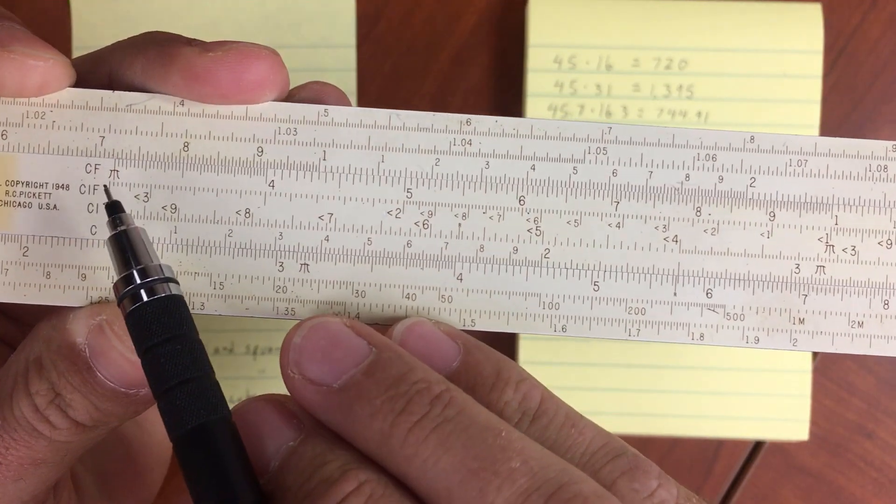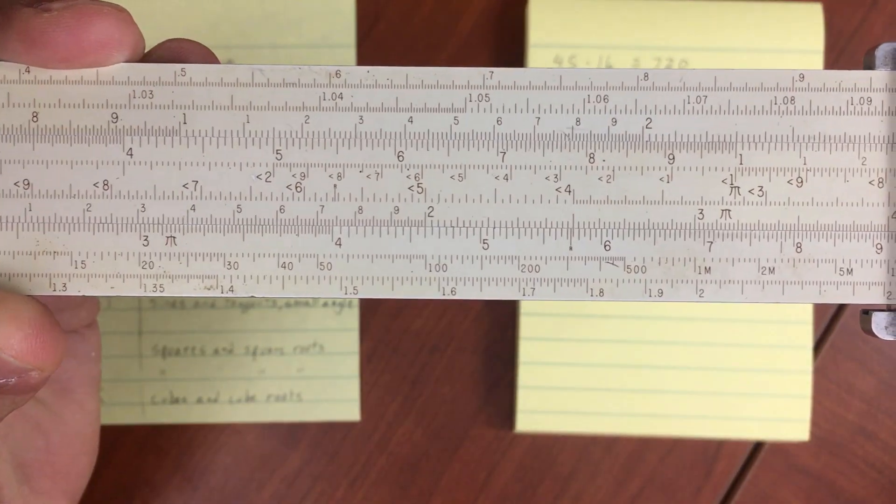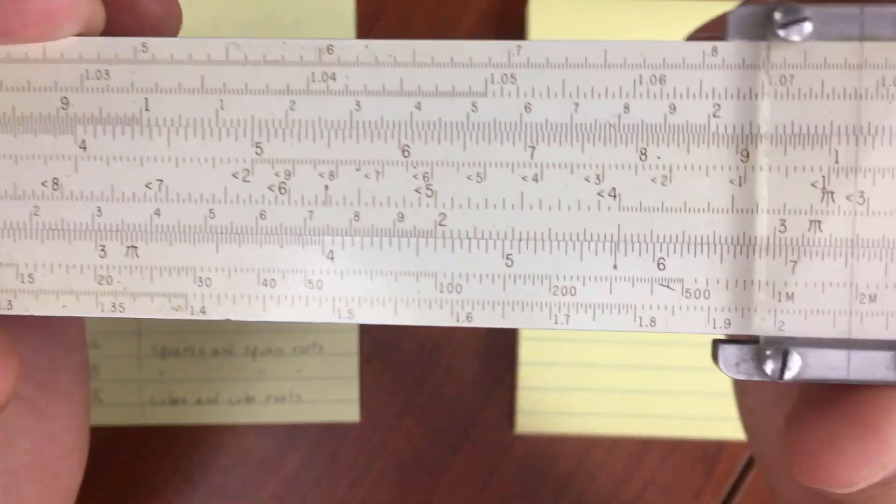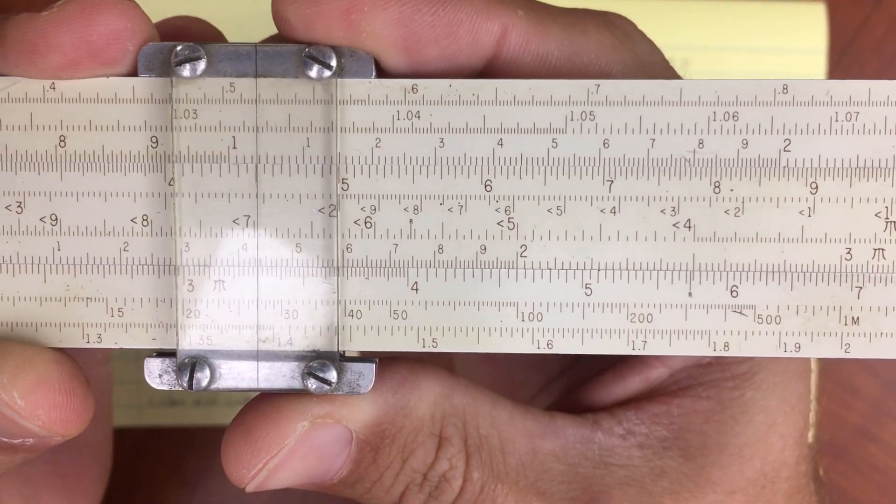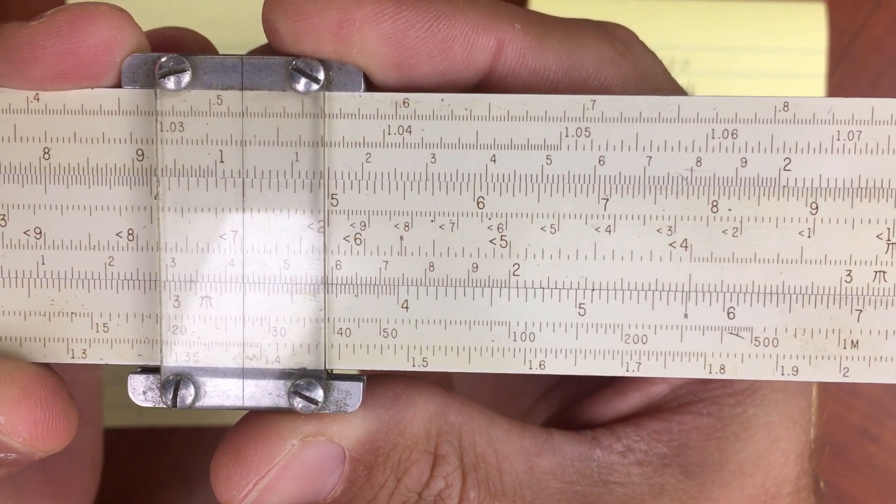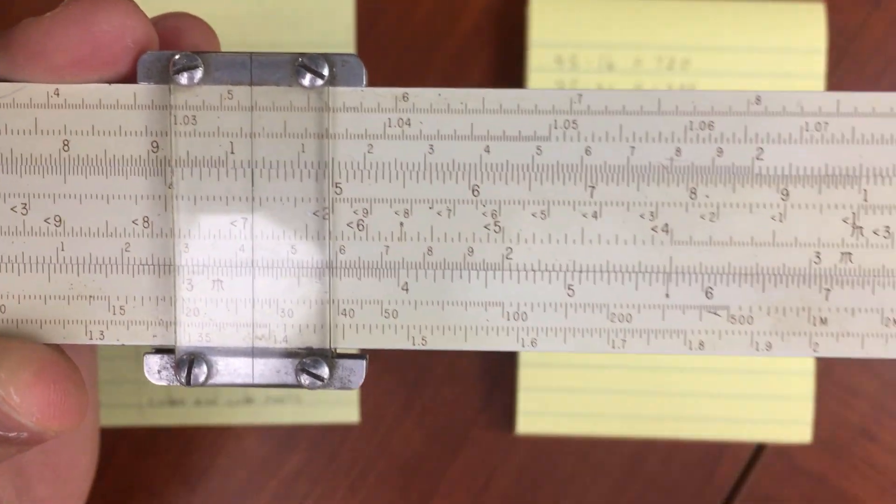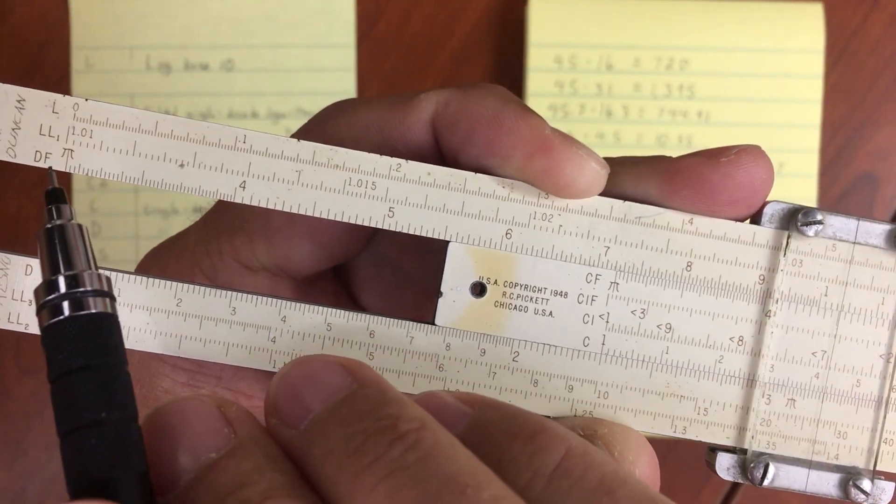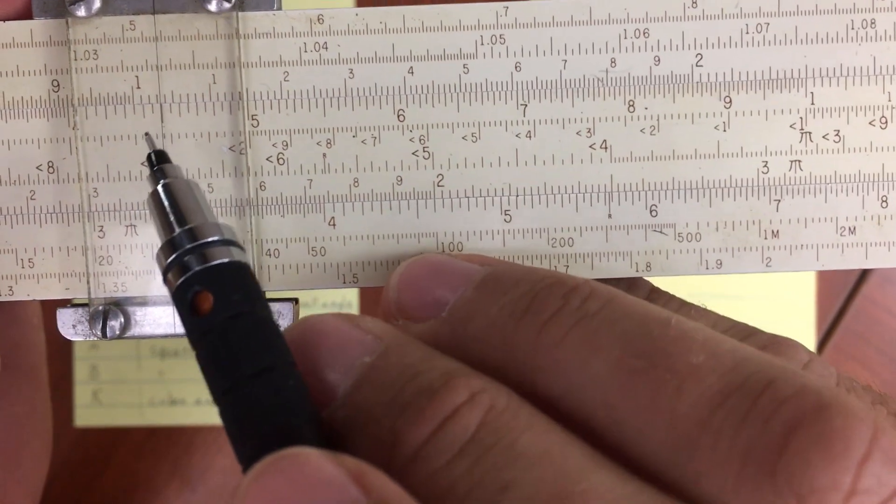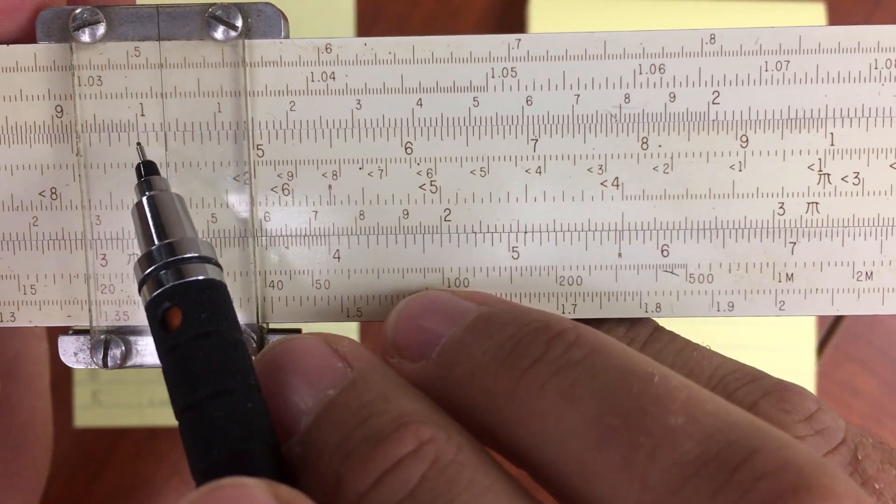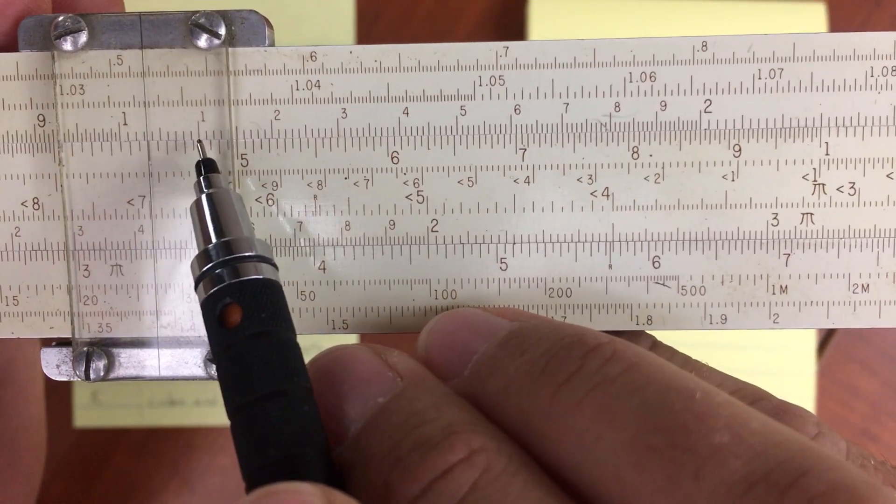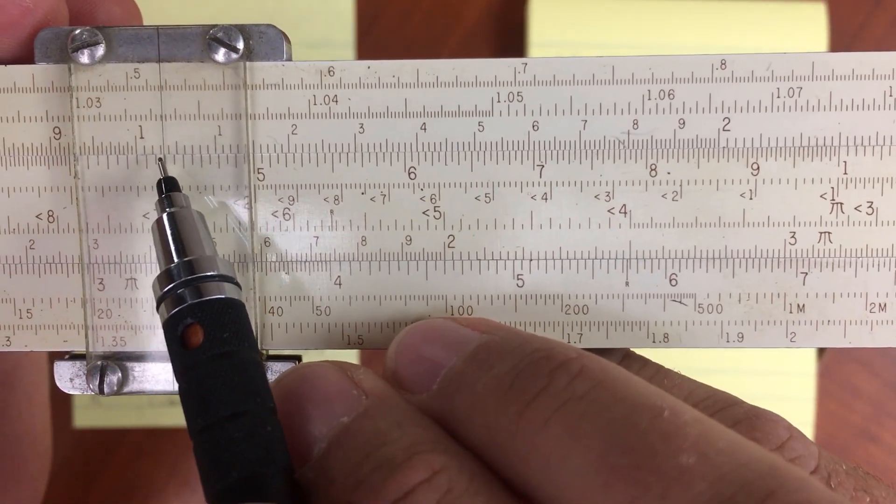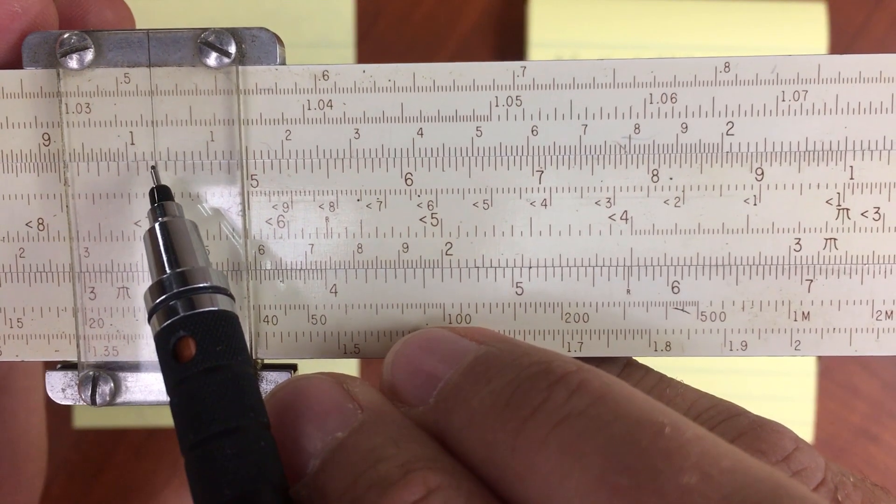However, we can use the CF scale. We'll see here, CF, that stands for folded. So we'll use the CF scale to do our other calculation, which is 4.5. So move that over to 4.5, and then read off the results on the folded DF scale. So there's DF on the end over here. So read off, we've got 1.0. We haven't got to 1.1 yet. So 1.0, 1, 2, 3, 5. So 1.035.